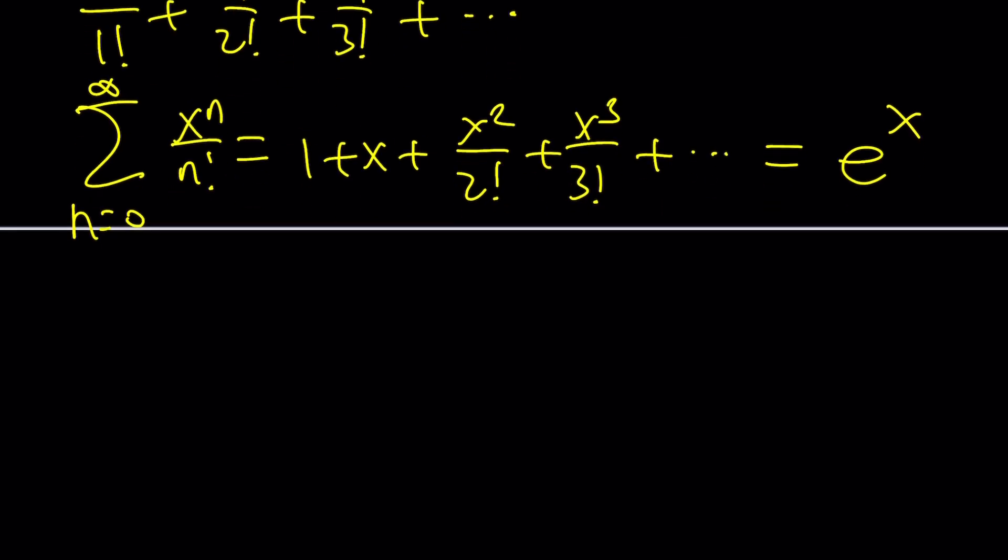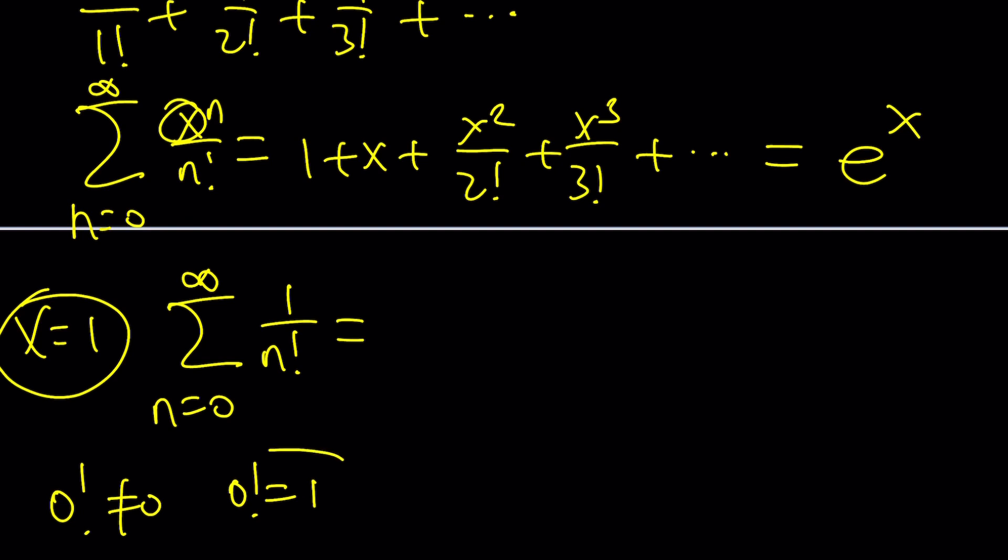So what happens if you replace x with 1? Then you get e to the power 1. So if you replace x with 1 in the sigma notation, you get 1 over n factorial, which is the sum of the reciprocals of factorials. But you must start with 0, which is important, and don't panic. 0 factorial does not equal 0. 0 factorial is actually equal to 1.